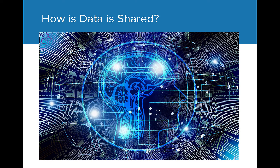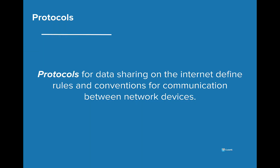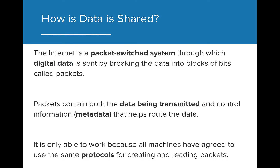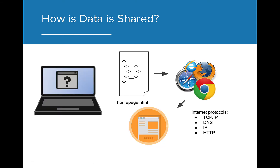All data is shared on the internet via what are called protocols. Protocols for data sharing on the internet are basically rules and conventions for communication between network devices. The internet is a packet-switched system through which digital data is sent by breaking the data into blocks of bits called packets. Packets contain both the data being transmitted and control information, or metadata, that helps route the data. It is only able to work because all machines have agreed to use the same protocols for creating and reading packets. Your computer and any server are able to share data because they use the same protocols — they are agreeing to speak in the same language.